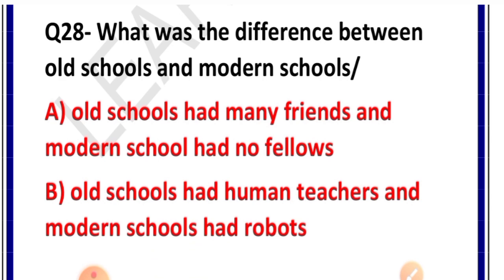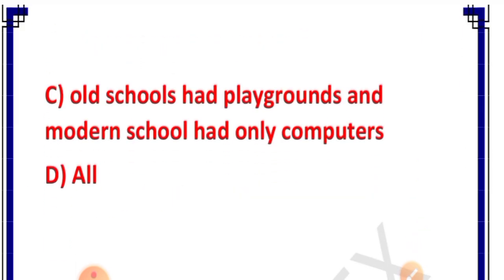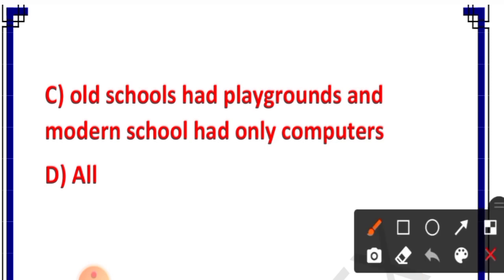Question number 28: What was the difference between old schools and modern schools? Options: A. Old schools had many friends and modern schools had no fellows, B. Old schools had human teachers and modern schools had robots, C. Old schools had playgrounds and modern schools had only computers, D. All. Correct answer is option D — all. Kyunki old schools mein friends, teachers, aur playgrounds the aur naye schools mein yeh sab kuch nahi tha.